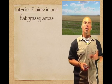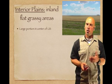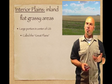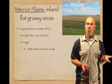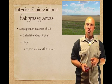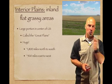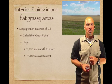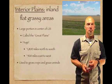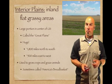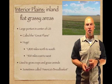Interior plains are inland, flat, grassy areas. This is a large portion in the center of the U.S., sometimes called the Great Plains. They're about 1,800 miles north to south and about 500 miles east to west — a big chunk of the U.S. This land is generally used to grow crops and graze animals, which is why it's sometimes called America's bread basket.